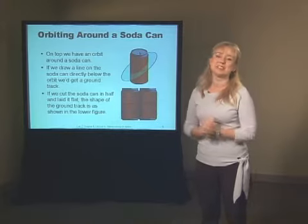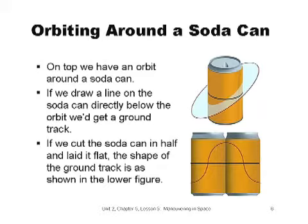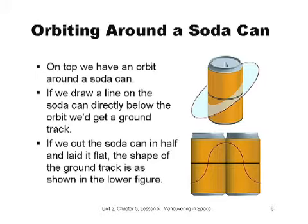After that great discussion, it's time for a soda can. Imagine that the Earth is not spherical but is shaped like a soda can. The black circle around the middle of the can represents the equator. The larger circle is the orbit around the Earth, and the blue area within the circle represents the orbit plane. From our previous discussion, this orbit plane must go through the center of the Earth, or can, in this example. If we draw a line on the soda can directly below the orbit, we'd get a ground track. Another way to think about this is if we tied one end of a string to the imaginary center of the can and the other end to the spacecraft in orbit, the string would carve out a line on the surface of the Earth as the spacecraft travels around in orbit.